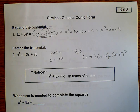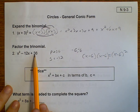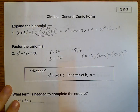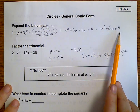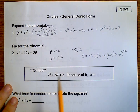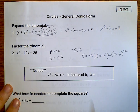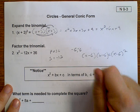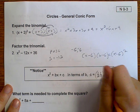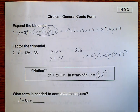So when we notice, if I take this as x squared plus bx plus c, b in terms of c is this: if we take one-half of b and then square it, we get c.